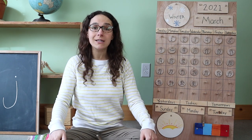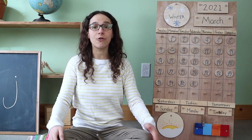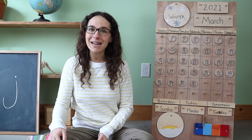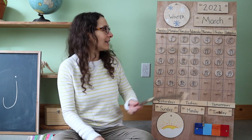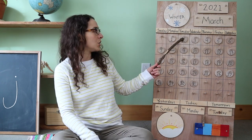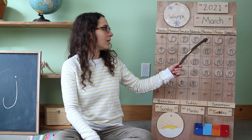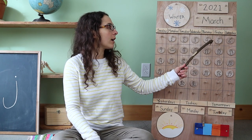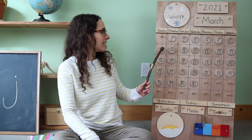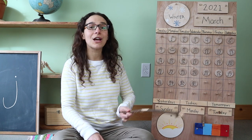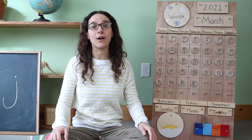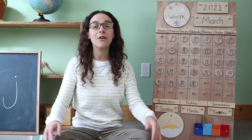We are going to count all the days that we've had so far in the month of March together. Are you ready? Let's start up here at number one. Two, three, four, five, six, seven, eight. We have had eight days so far in the month of March.